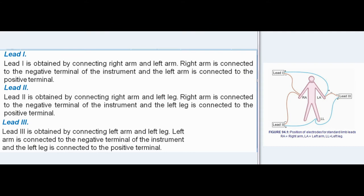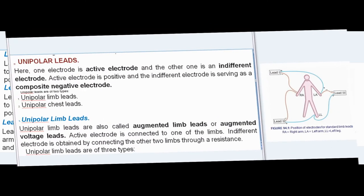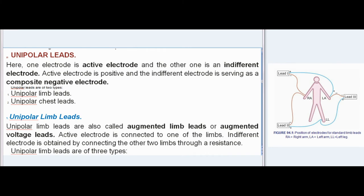Unipolar leads are of two types: unipolar limb leads and unipolar chest leads. Unipolar limb leads are also called augmented limb leads or augmented voltage leads. The active electrode is connected to one of the limbs, and the indifferent electrode is obtained by connecting the other two limbs through a resistance. Unipolar limb leads are of three types: AVR lead, AVL lead, and AVF lead.